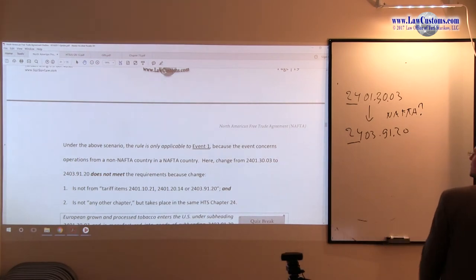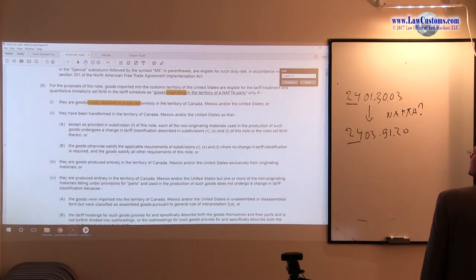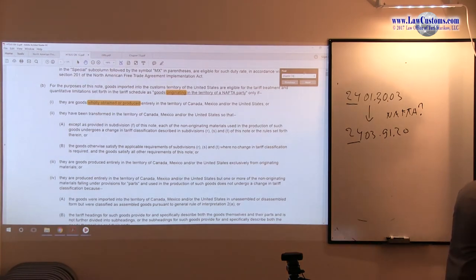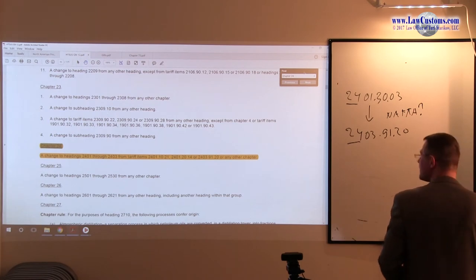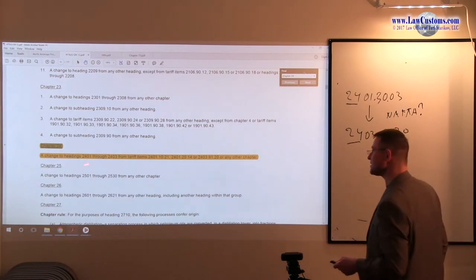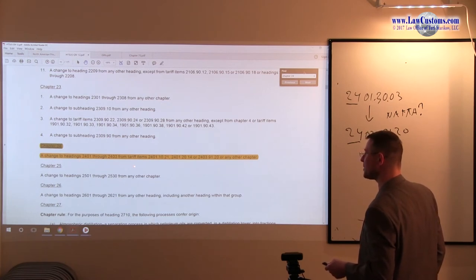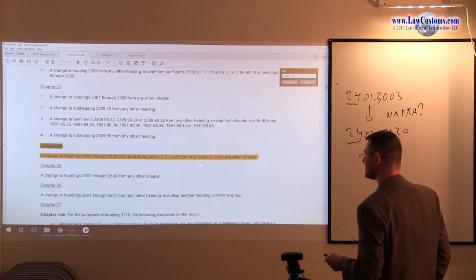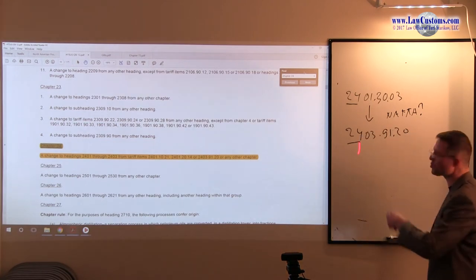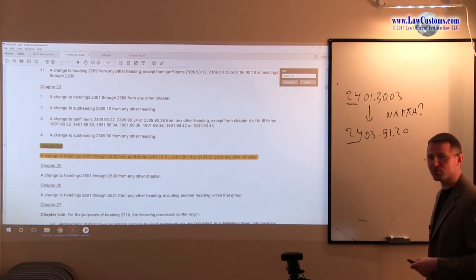We find the chapter 24 rules in the general note 12. It says a change to heading 24.01 through 24.03 from tariff items or any other chapter. We know that there is no change from any other chapter has occurred, so any other chapter clause is not applicable.